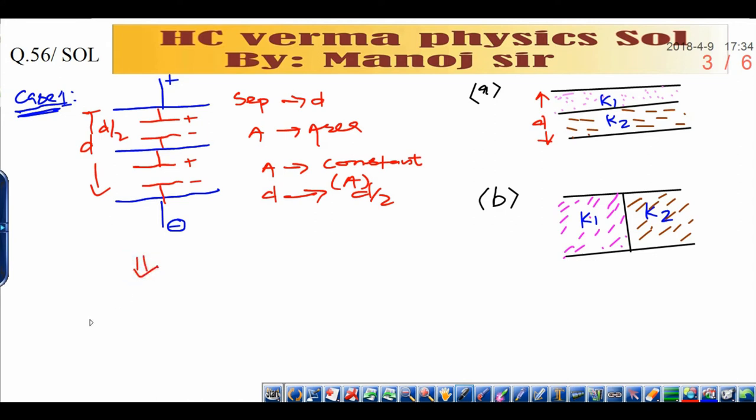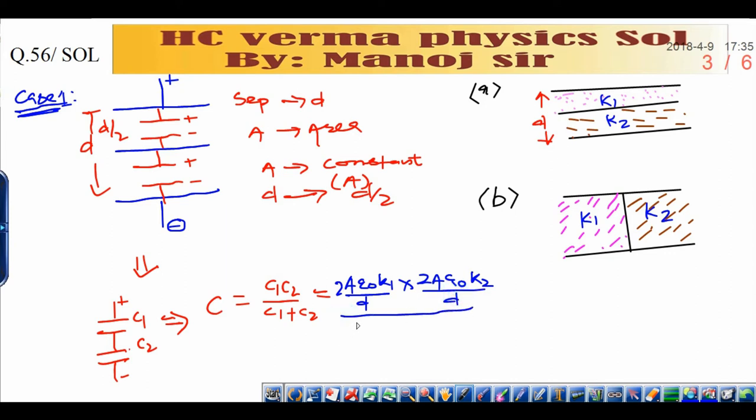When you reconstruct the diagram after simplification, it will be like this. These are the terminals, this is capacitor C1, this is capacitor C2. Now you see carefully, it is in series combination. Net capacity can be solved by C1 times C2 divided by C1 plus C2. Now put the value of C1 C2. If you substitute the value of C1, C1 means A epsilon naught K1 divided by D by 2, you can write 2A epsilon naught K1 over D. Similarly, C2 is 2A epsilon naught K2 over D, and whole divided by the value of C1 plus C2. You can take 2A epsilon naught upon D common here and write K1 plus K2.